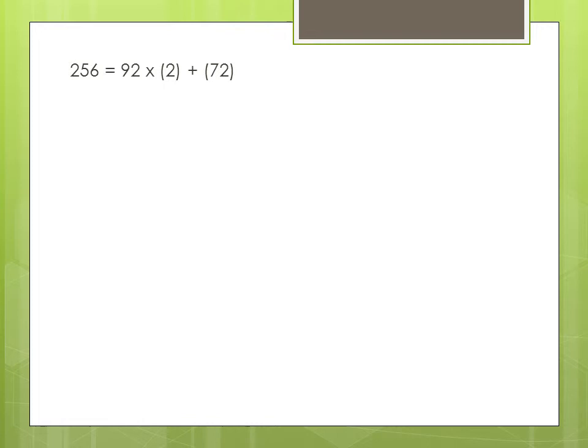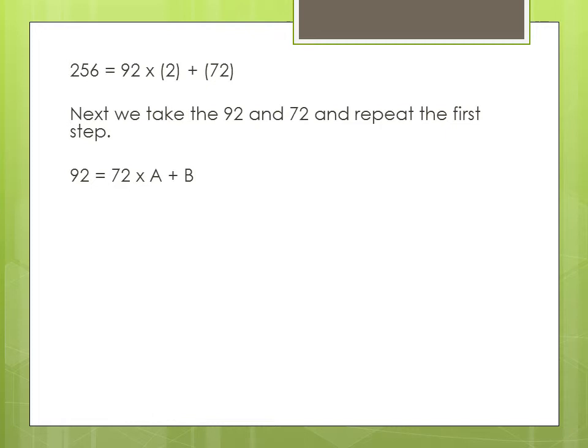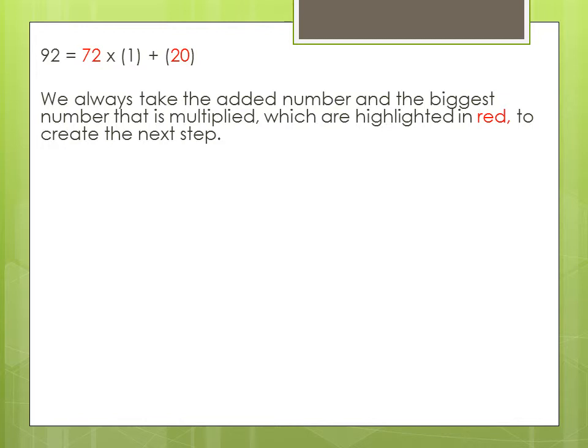Next from the previous form we take 92 and 72 and repeat the procedure to find a and b. We continue this procedure by taking the added number and the biggest number that is multiplied which are highlighted in red to create the next step.